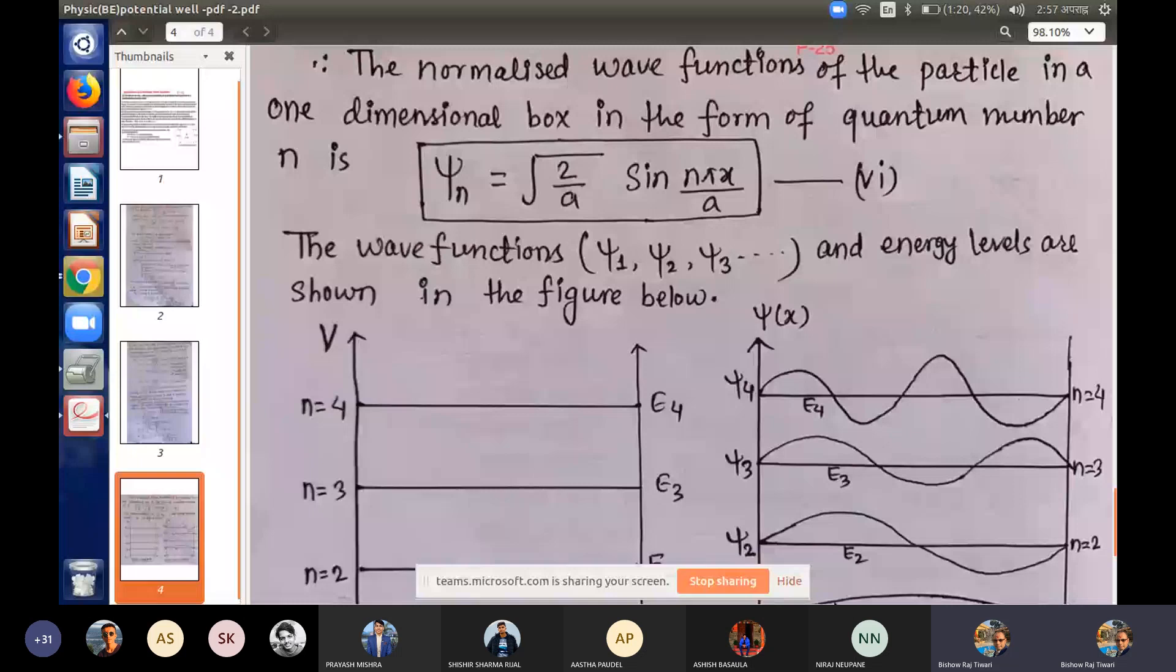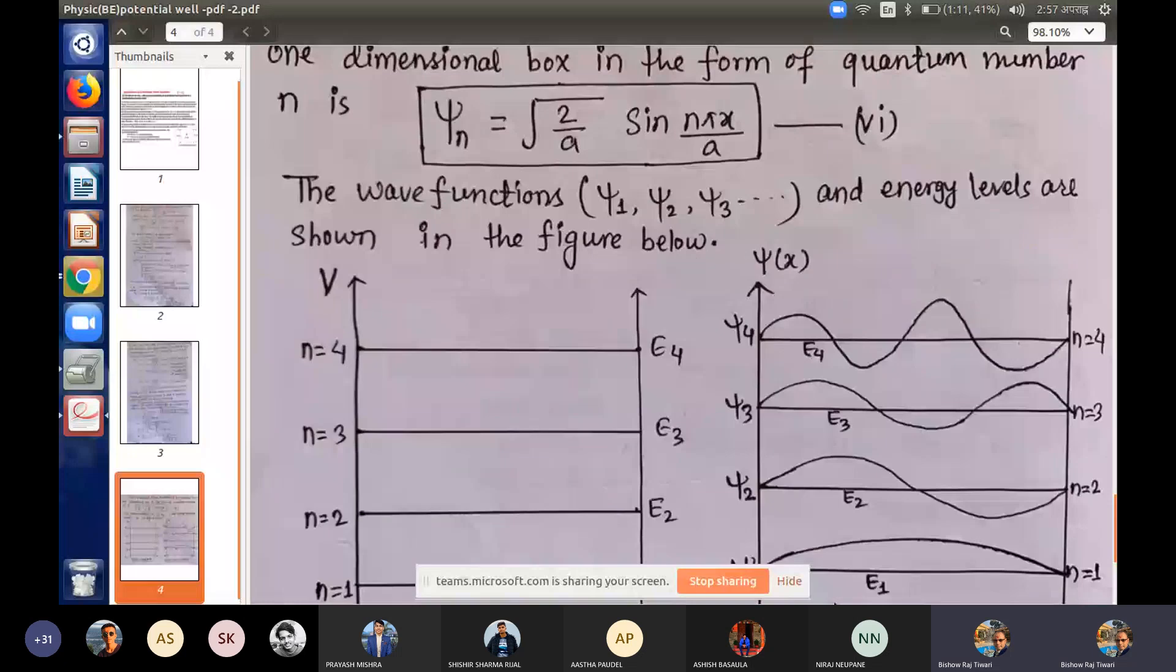Page number 26 and 25. No problem. The figure is that the energy levels are located on the horizontal line. The potential well of the particle: energy levels n equals 1, 2, 3, 4, 5.